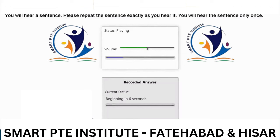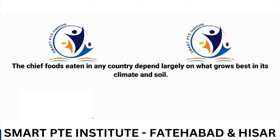Over a very large number of trials, the probability of an event occurring is equal to the probability that it will not occur.